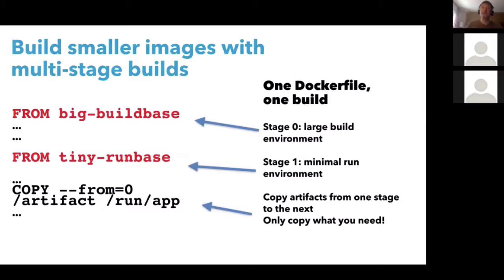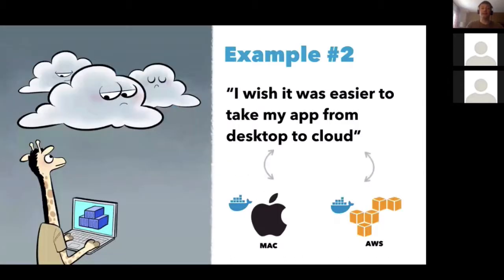There's a new instruction: `--from`, where you reference the index of the FROM step you created above. So here I'm copying from stage zero's `/artifact` directory into `/run/app` — I just copy what I need from the build image. Multi-stage builds will help you create smaller images, and lots of developers have been asking for that.